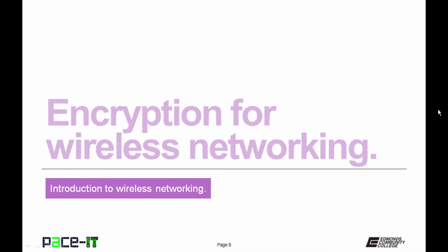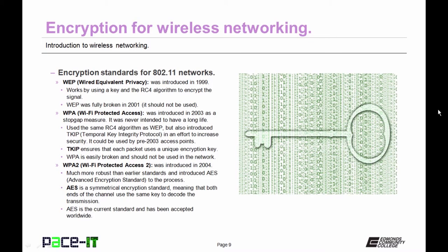Now let's move on to encryption for wireless networking. Why do we need encryption for our wireless networks? Because they transmit over the air, anybody can intercept the signal. So for security, we should encrypt our wireless networks. That brings us to the encryption standards for the 802.11 network. First up is WEP, Wired Equivalent Privacy.